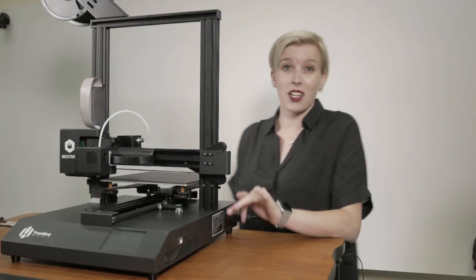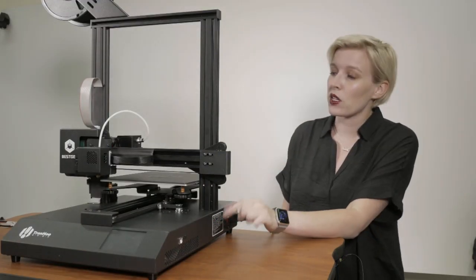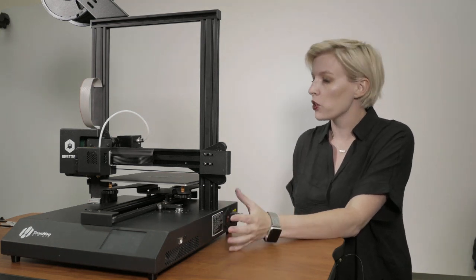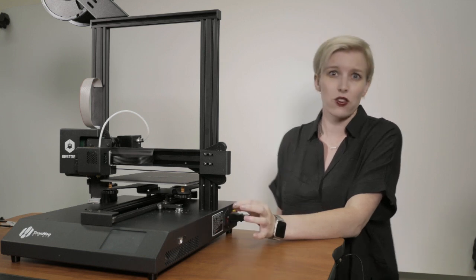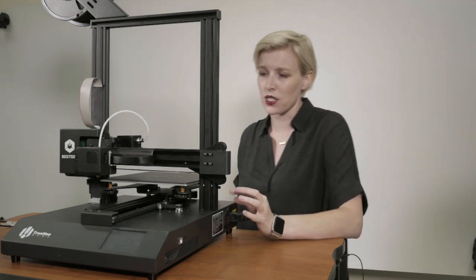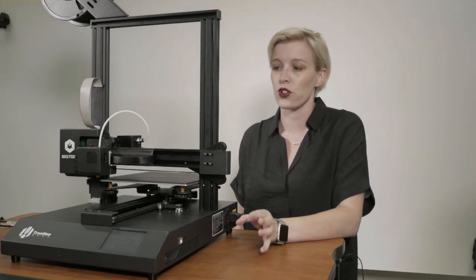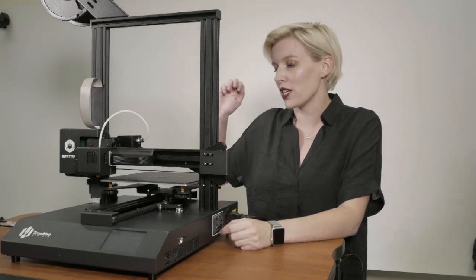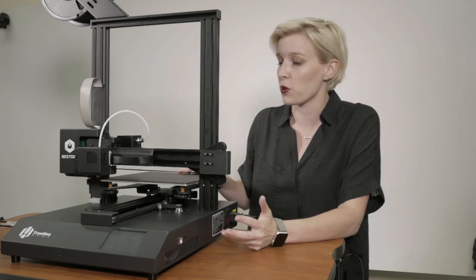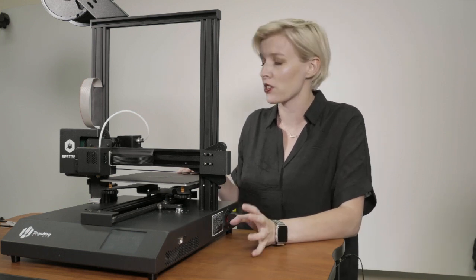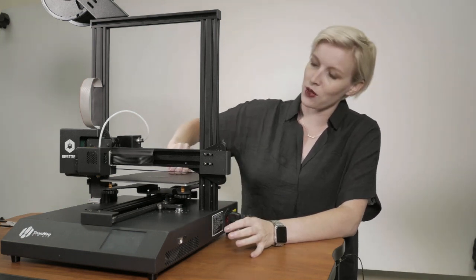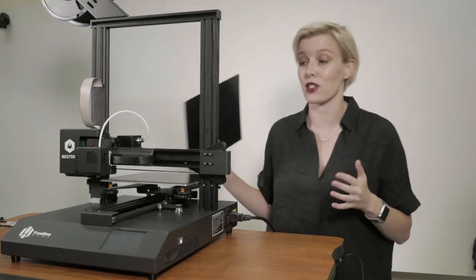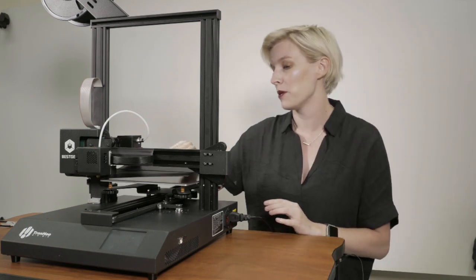The print volume on this is actually really nice. It's 220 by 220 by 250. If you are familiar with the Ender 3 by Creality, it's actually pretty similar in print size. The Ender 3 I think is 235. So very similar build volume, and you also have a heated print bed, which if you're printing with PLA like I normally do, that's going to be really awesome. It also comes with a removable flexible base, which is also really awesome when you're trying to pop a print off the bed.